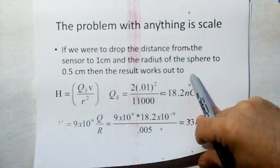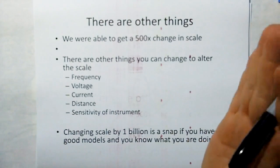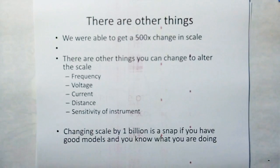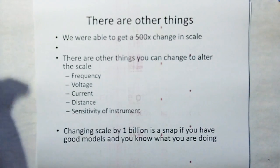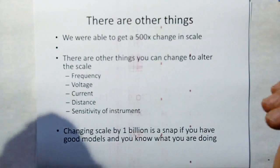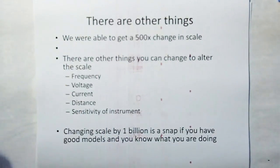Already we have a 500 time improvement just by changing 100 centimeters to one centimeter. And there are other things you can do to alter the scale. You can go up in frequency. You can increase the voltage. You can increase the current or the charge or reduce or expand the distance, depending on how the equation says the best way to do it is.